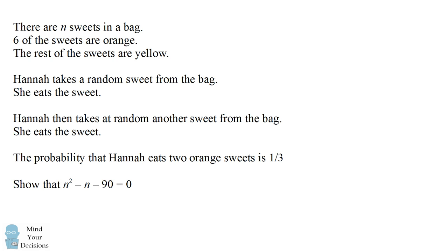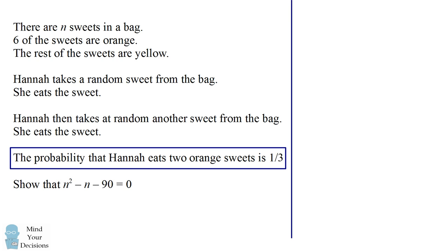Can you figure out this problem? Let's work through it step by step. We know that the probability that Hannah eats two orange sweets is one third, so we'll write that as our starting statement.